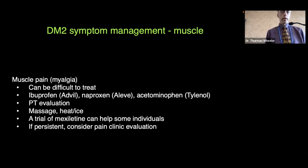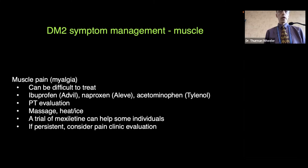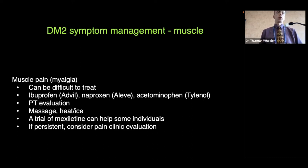Muscle pain or myalgia can be very problematic and very difficult to treat. First-line therapies include ibuprofen (Advil), naproxen, and acetaminophen. A PT evaluation can help, along with massage, heat, ice, and ultrasound therapy from the physical therapist. A trial of mexiletine can also help some individuals. A pain clinic evaluation can be helpful, although some individuals go through all of these trials and still have pain that is refractory to treatment.